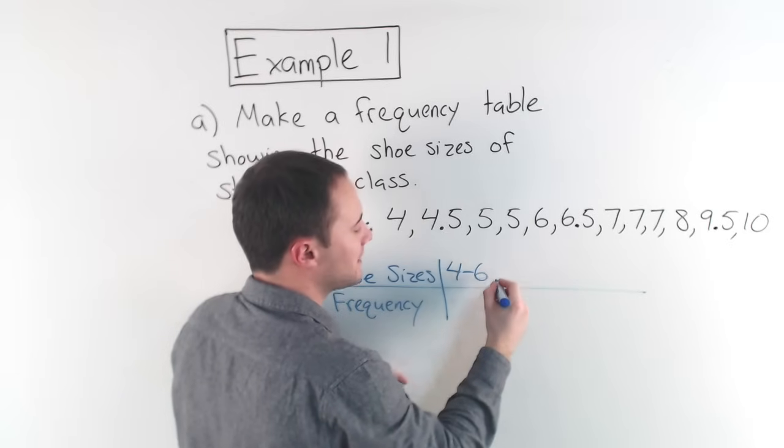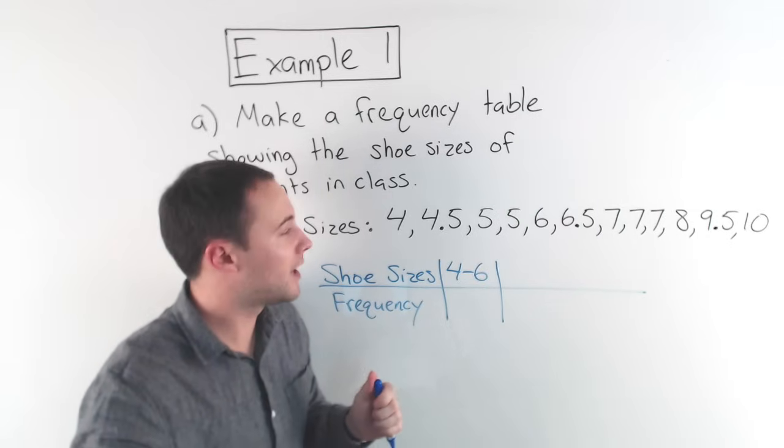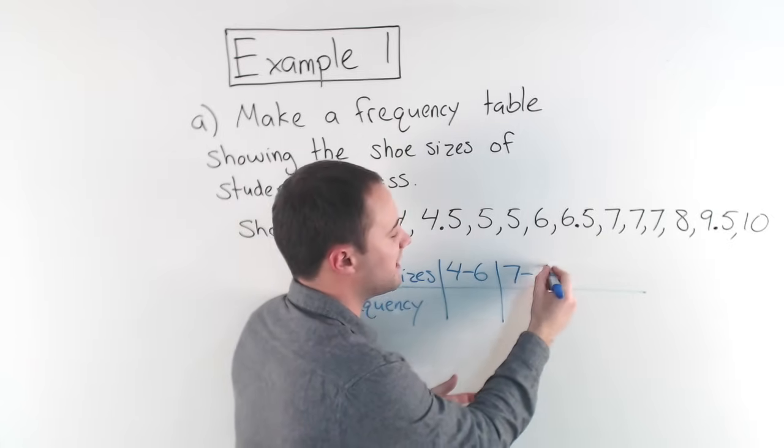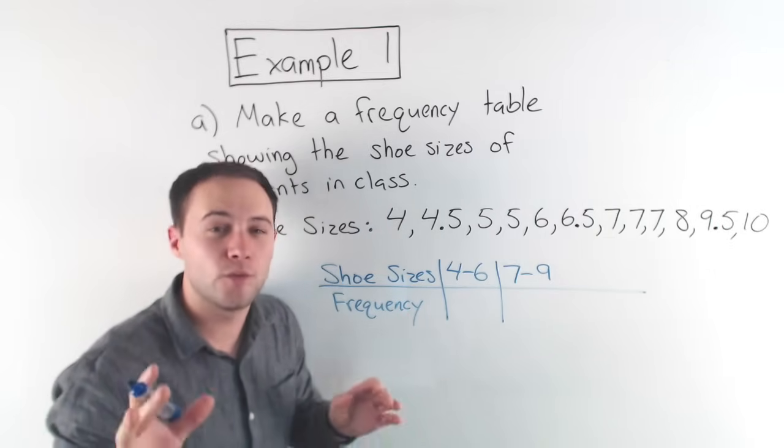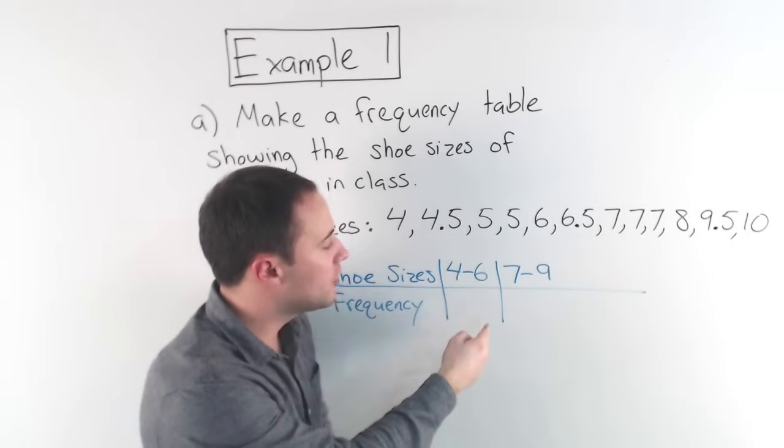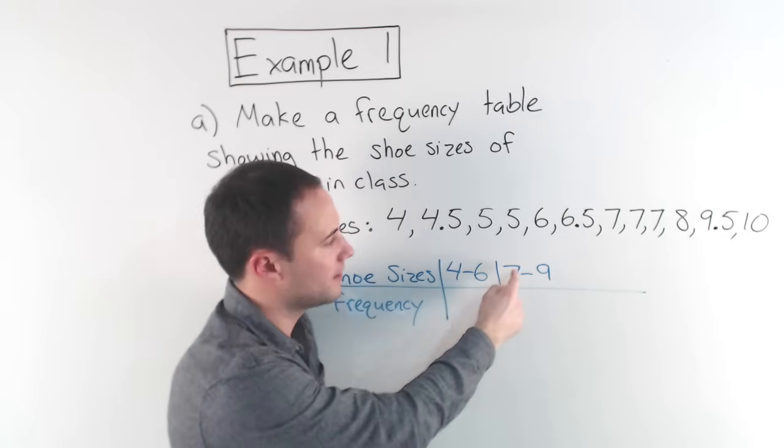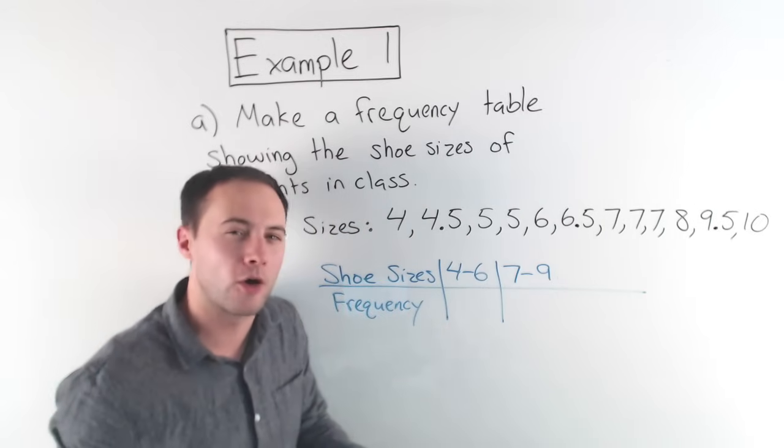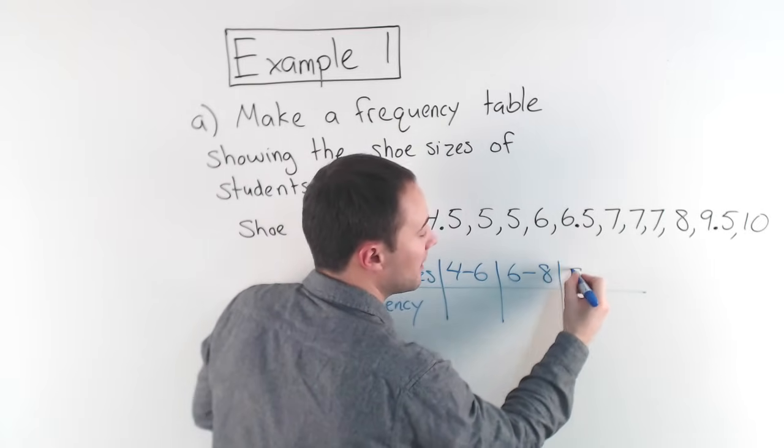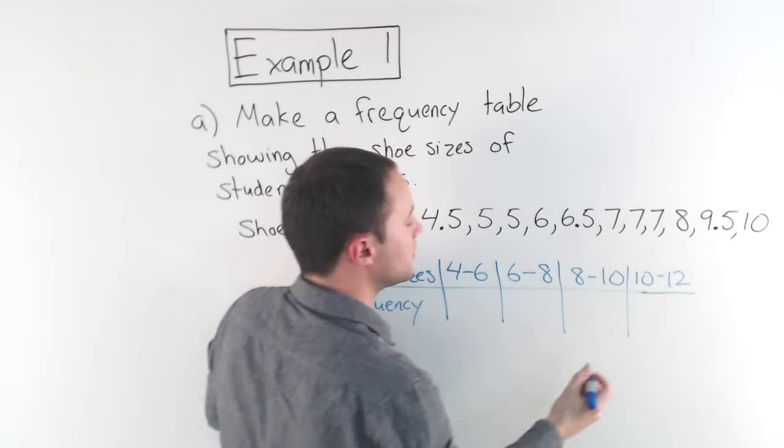So I'm going from four all the way up to ten. So I think I'm going to go for my intervals by two. So I'm going to go from four to six for my first interval. Now your teacher or your book might show you something like this. So four to six, then seven to nine, 10 to 13. And that can work as long as you have integers for your data.